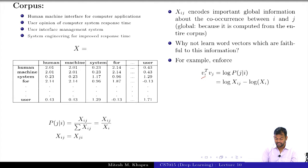Why not learn word vectors which are faithful to this information? Suppose V_I is the representation of the Ith word and V_J is the representative of the Jth word which I want to learn. I do not have these representations, I want to learn them.